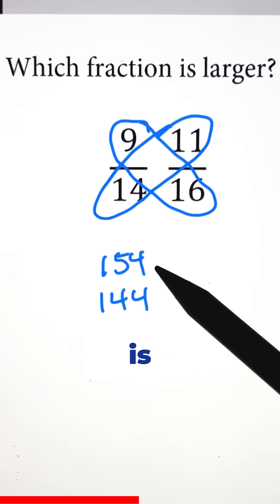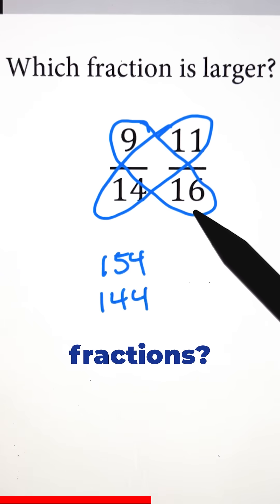But how do we know which one is bigger? We know that 154 is obviously bigger than 144, but what does that tell us about the two fractions?